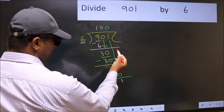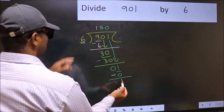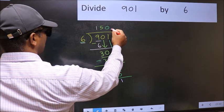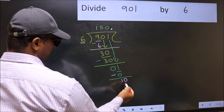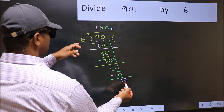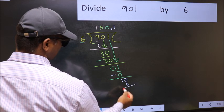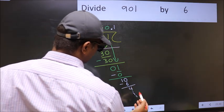Over here, we did not bring any number down. And 1 is smaller than 6. So now you can put dot and take 0. So 10. A number close to 10 in 6 table is 6 ones, 6. Now you subtract, you get 4 and continue the division.